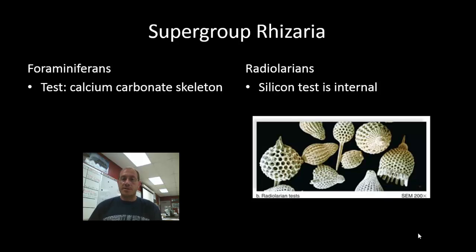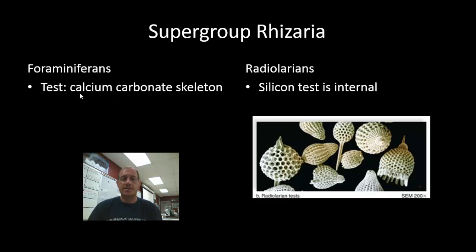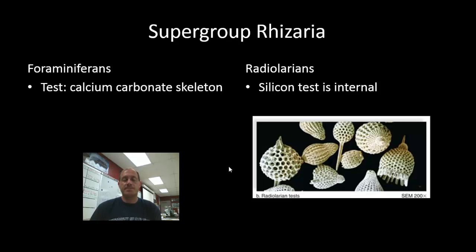The last supergroup is the Rhizaria. These organisms were at one time believed to be related to amoeba because they also have pseudopods, but we now know they are not as closely related as once believed. Both foraminiferans and radiolarians form a test — an external skeleton. Foraminiferans' tests are formed from calcium carbonate, and the remains of these organisms form a layer of sediment found on the ocean floor. Radiolarians have a silica test that is actually internal, and the name refers to the radial symmetry of their shells. And that is the protists — I hope that you learned something.